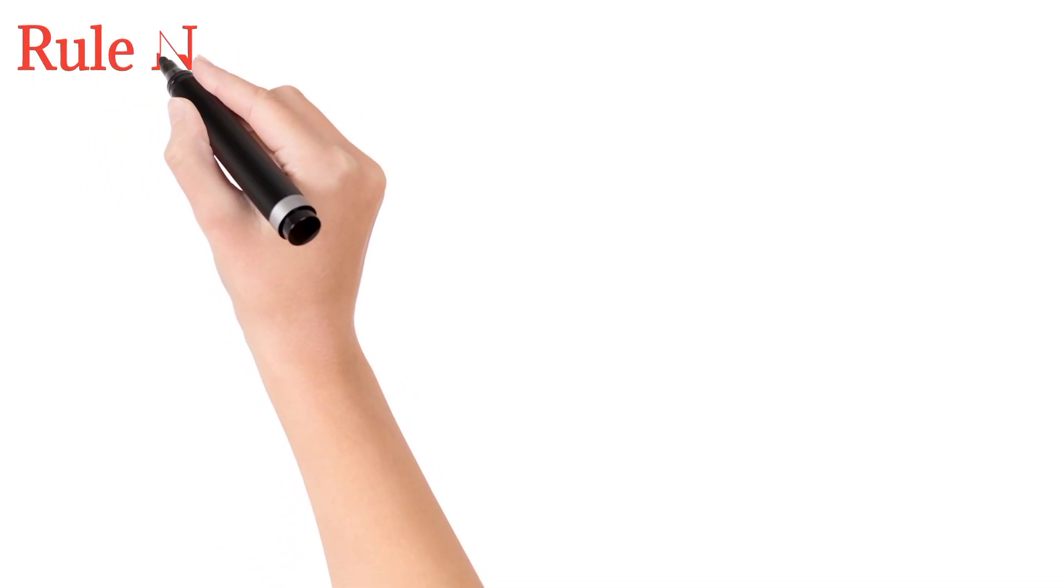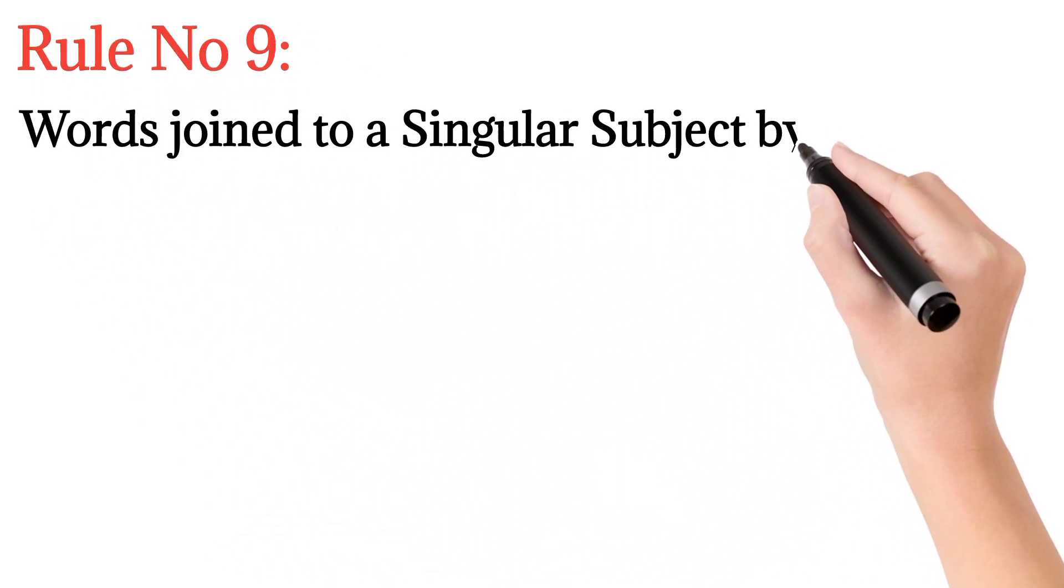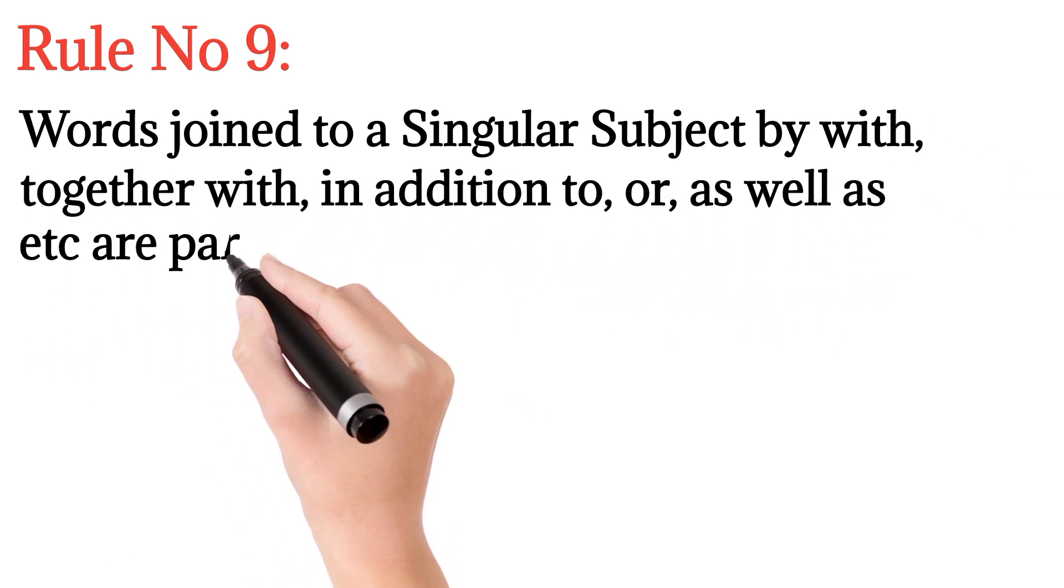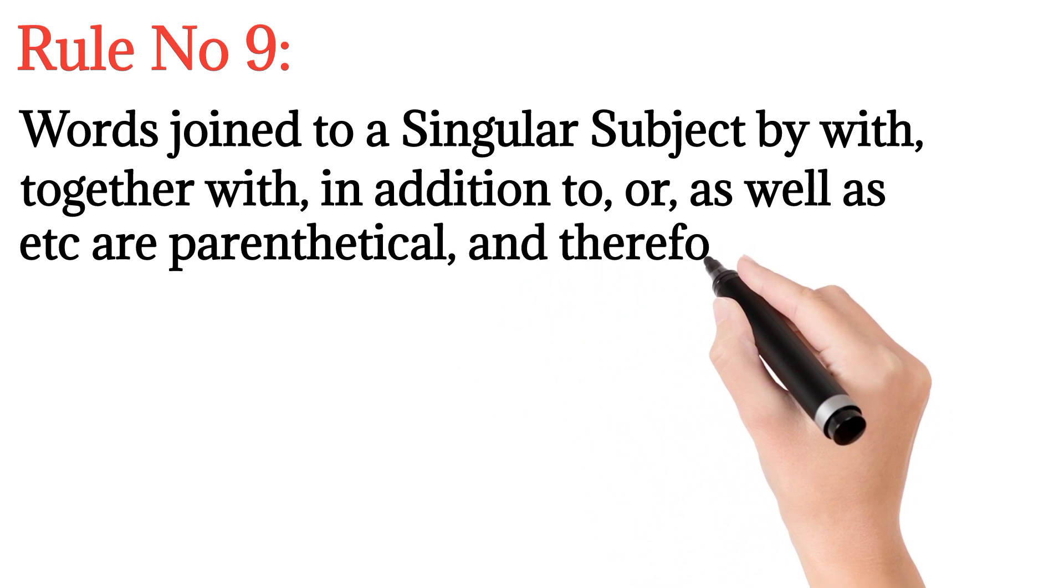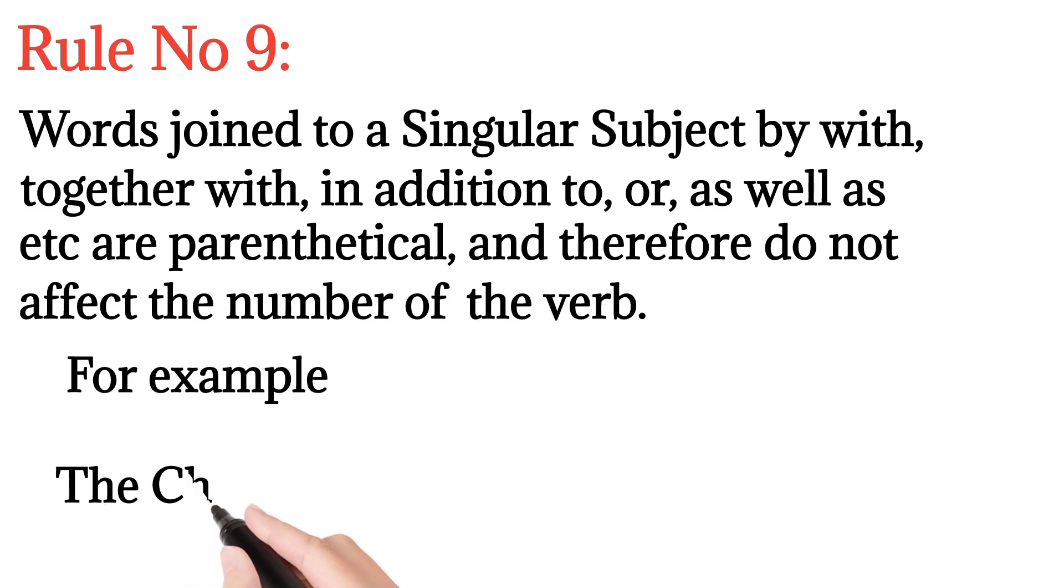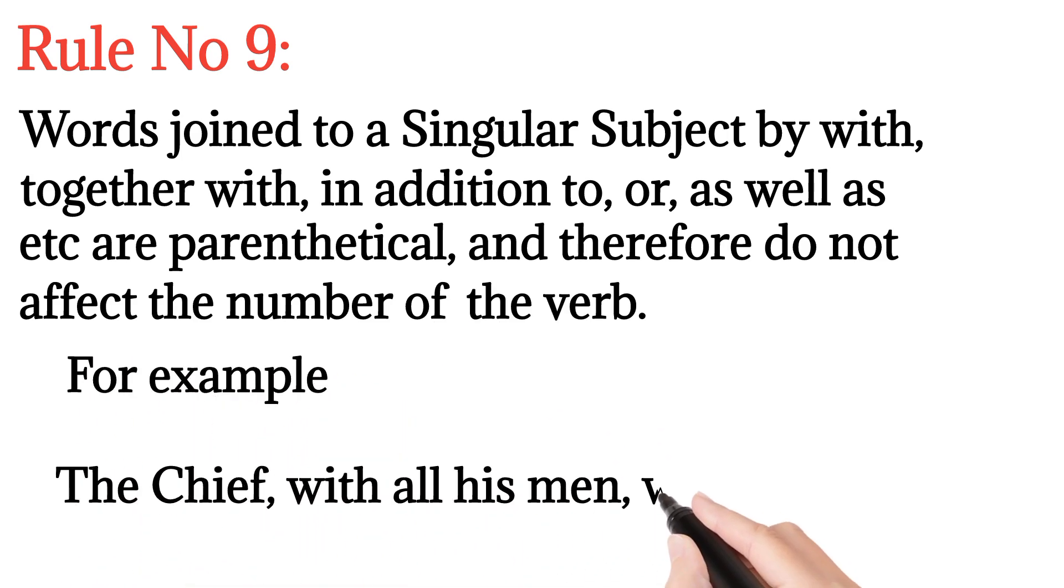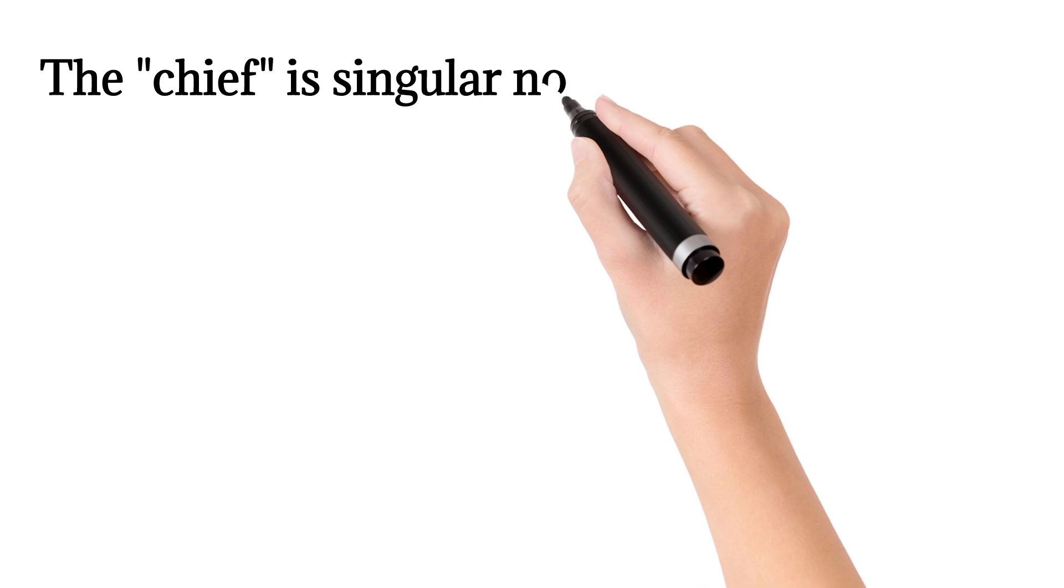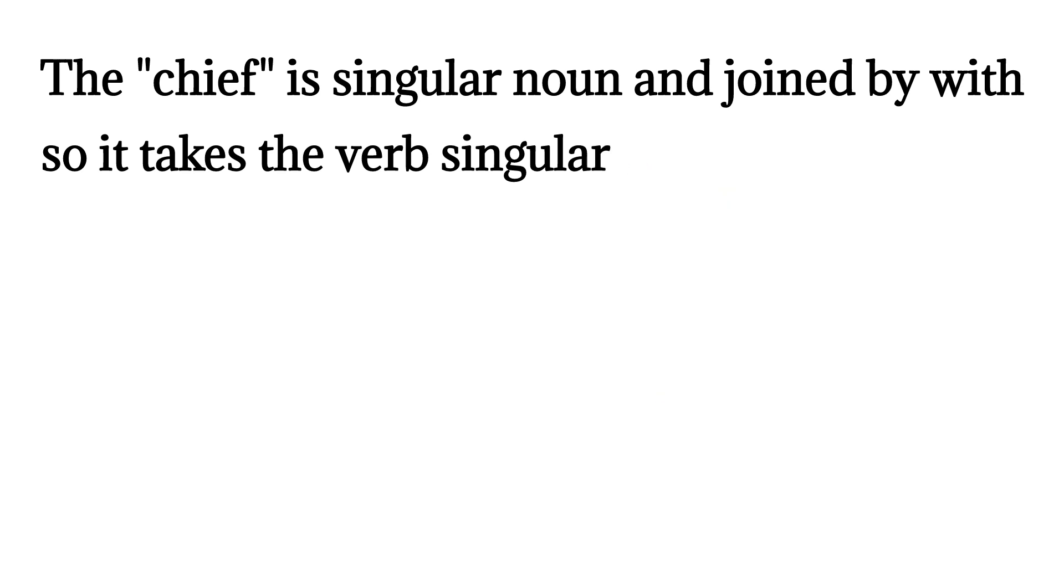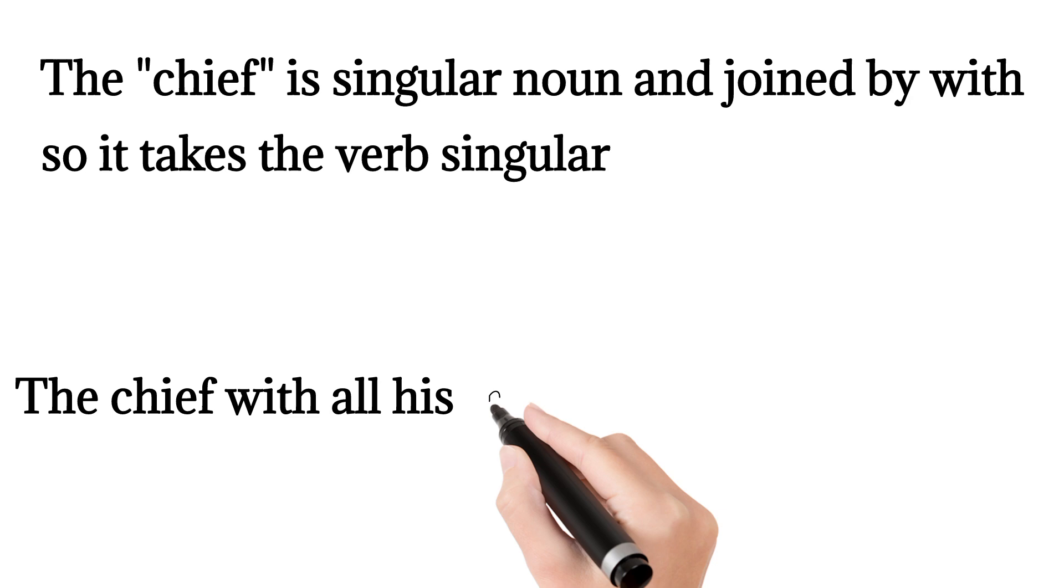Rule number nine: Words joined to a singular subject by 'with', 'together with', 'in addition to', or 'as well as' are parenthetical and therefore do not affect the number of the verb. For example, 'the chief with all his men were mischievous' - this sentence is incorrect because here 'the chief' is a singular noun joined by 'with', so it takes the verb in singular, not plural. The correct form of this sentence is 'the chief with all his men was mischievous'.